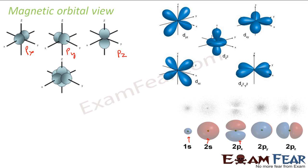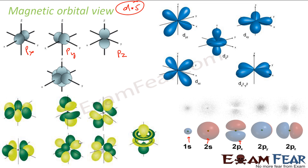Now if you talk about D, for D we have 5 different orientations. This is Dyz because the YZ plane is where these orbitals lie. This is Dxy because XY is the plane. This is Dxz because XZ is the plane. This is Dx²-y² with X and Y in that fashion. And this is Dz² because it lies along the Z axis. These are the 5 different orientations of the D orbitals. Similarly for F we have 7 different orientations. All are F orbitals but their orientation is different, and the magnetic orbital quantum number determines the orientation of these orbitals.